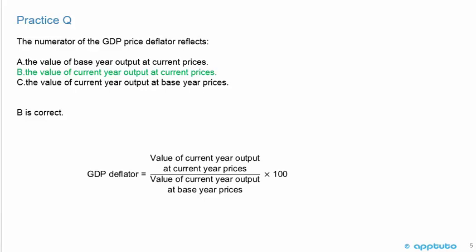That one should be fairly easy. It's just memorizing the formula. A lot of memorization in CFA Level 1. So again, the GDP deflator numerator is the value of current year output at current year prices, divided by the value of current year output at base year prices, times 100. So the correct answer is B, the value of current year output at current year prices.